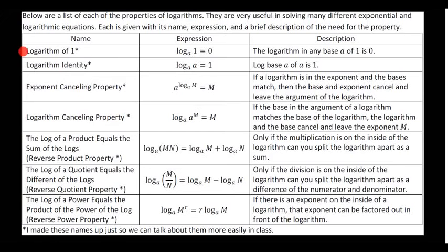The first one, logarithm of one. What it says is log base anything of one is always equal to zero. We saw that in the previous video when we were graphing some of the logarithms. The logarithmic identity says that if the base and the argument match, it's equal to one. This makes sense because a to the first would give us a.